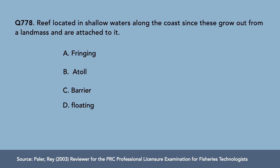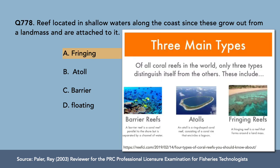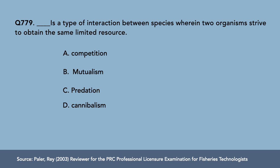Question 8: A reef located in shallow waters along the coast, growing out from a land mass and attached to it — A) fringing reef, B) atoll, C) barrier reef, D) floating. The correct answer is letter A, fringing reef. Barrier reefs are parallel to the shore but separated by a channel of water. Atolls are ring-shaped coral reefs encircling a lagoon. Fringing reefs form directly around a land mass.